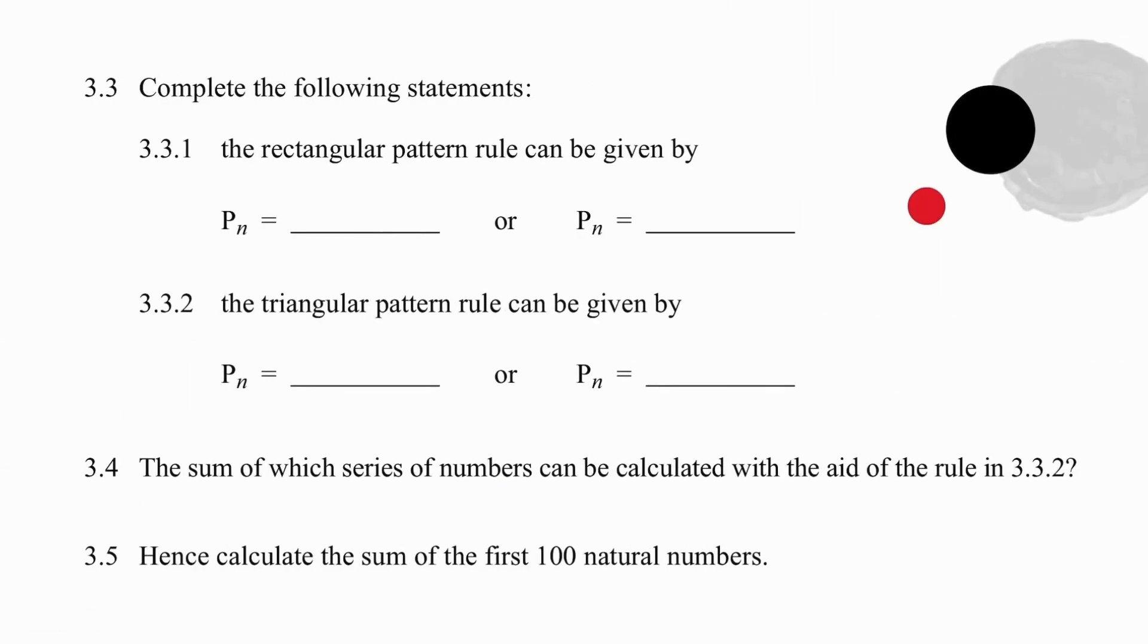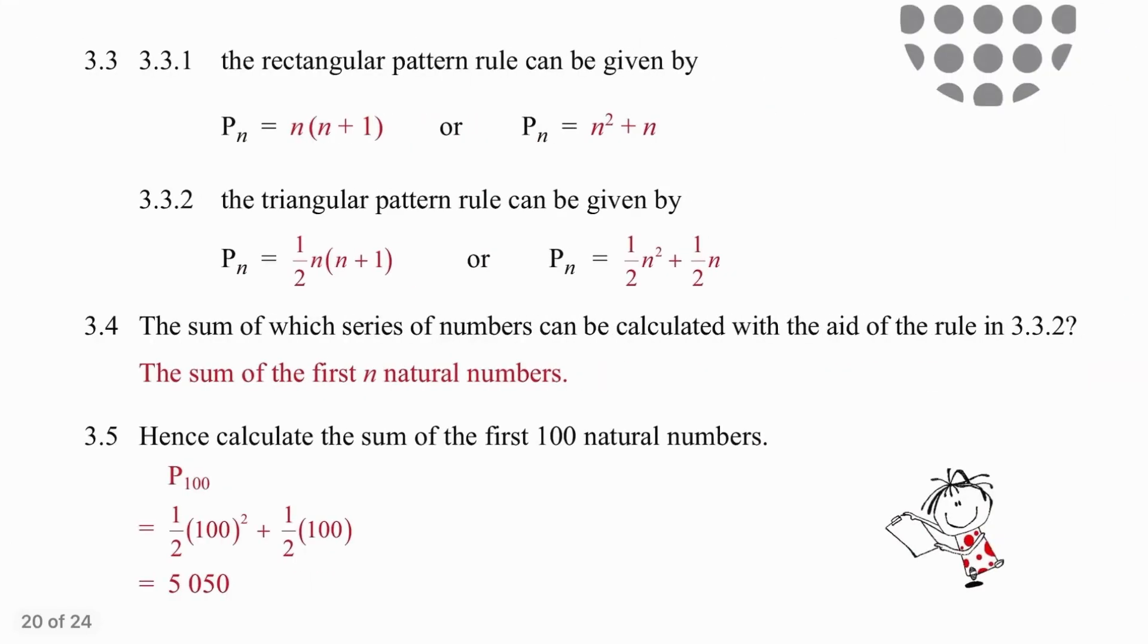Pause the video and fill in these values, and then we will look at them together. Our rectangular number pattern should be becoming more familiar. Half of that gives us the triangular number pattern, which is rather convenient and helpful. What we have now is a formula for the sum of the first n natural numbers. So if we want to add all the numbers from 1 to 100, without any gaps in between, we simply take a half of 100 squared, a half of 100, and we get an answer of 5050.